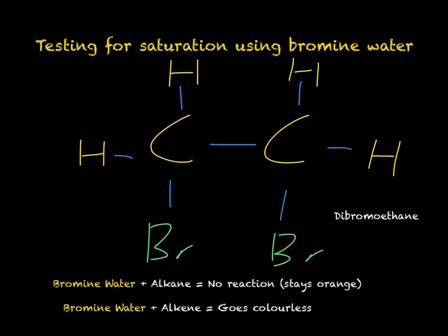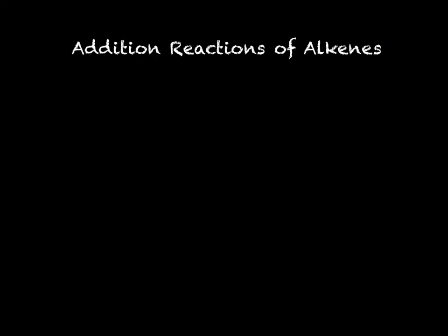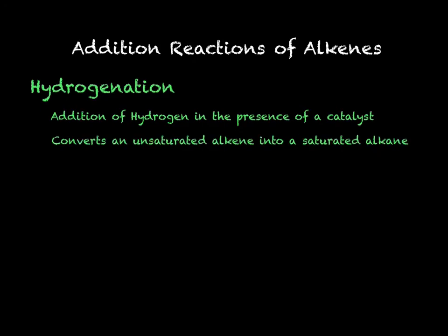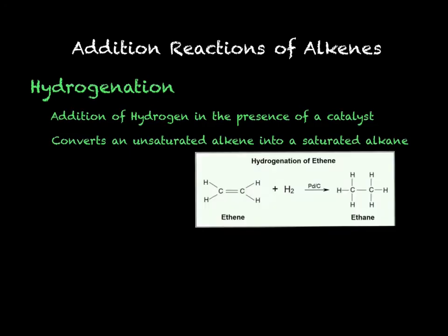We are going to look at two other addition reactions that we can carry out with alkenes. The next addition reaction is known as hydrogenation — this is where we add hydrogen across the double bond, converting an unsaturated alkene into a saturated alkane. In this reaction, the alkene is reacted with hydrogen in the presence of a catalyst. This is sometimes known as catalytic hydrogenation.